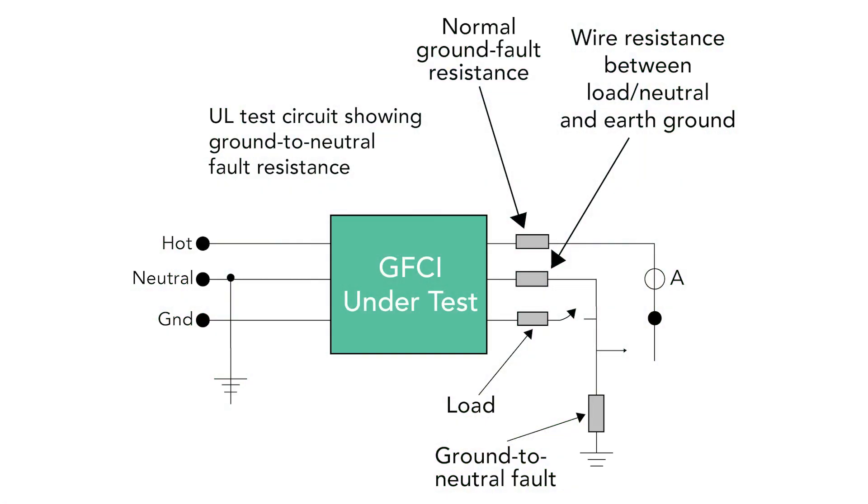The standard specifies the GFCI's trip with fault currents of 6 milliamps for specified ground fault resistances and for a specified combination of ground to neutral resistance and wire resistance between the load neutral and earth ground.